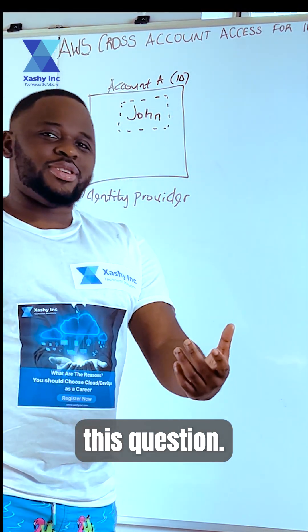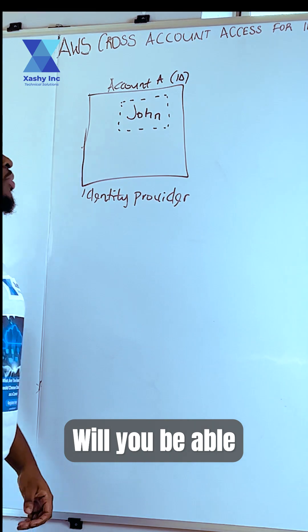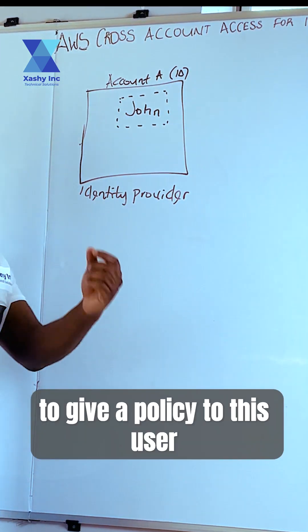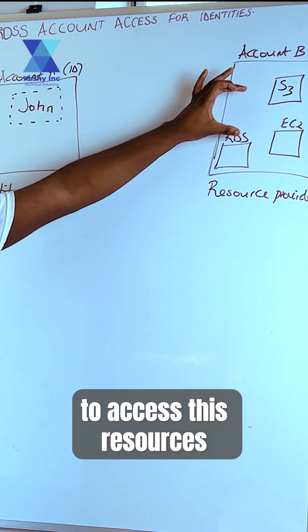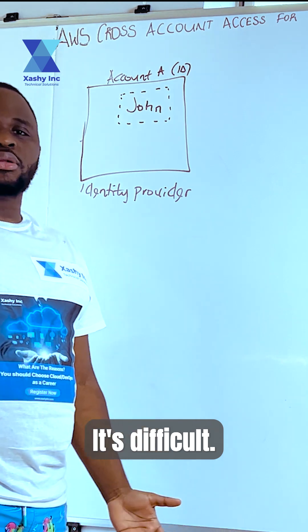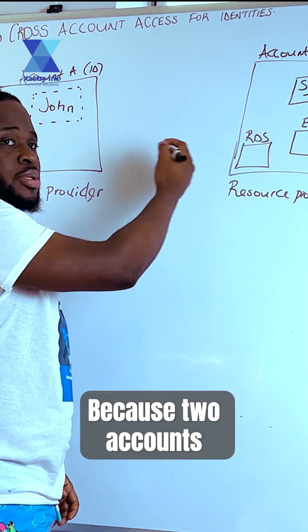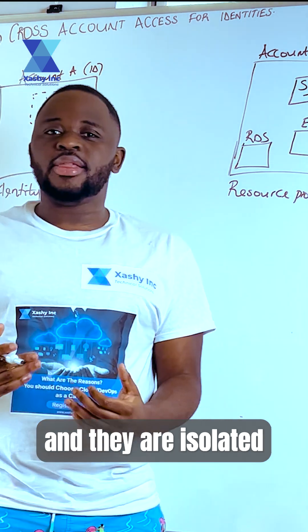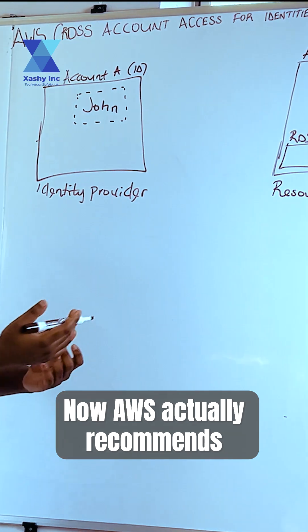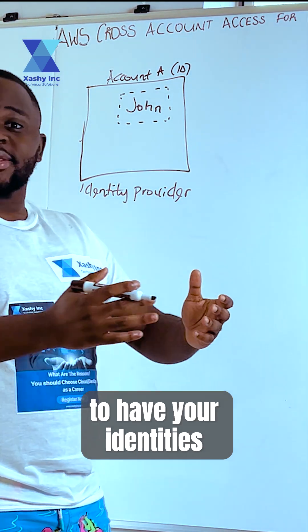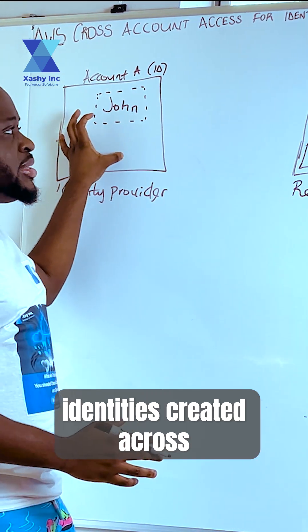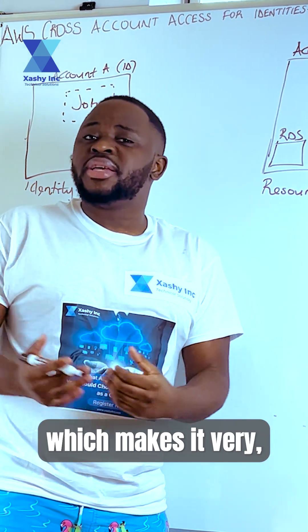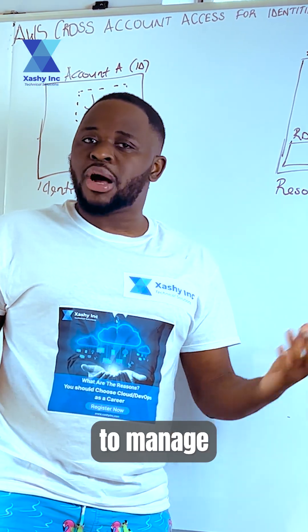Ask yourself this question: will you be able to give a policy to this user called John to access these resources in account B? It's difficult. Why? Because two accounts actually means they are different and they are isolated from each other. AWS actually recommends that it's advisable to have your identities in one account — it is not good to have identities created across different accounts, which makes it very difficult to manage.